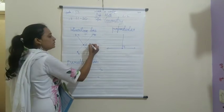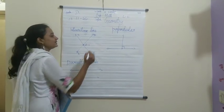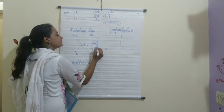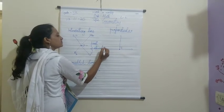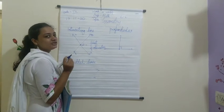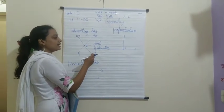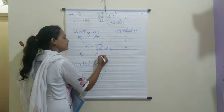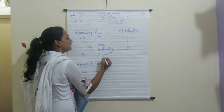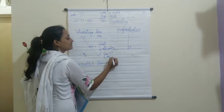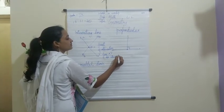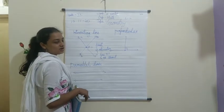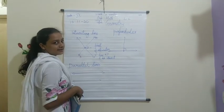That point O has a special name called the point of intersection. Intersection means joining or meeting. You can read it as: line XY and line AB intersect each other. That is why they are called intersecting lines.